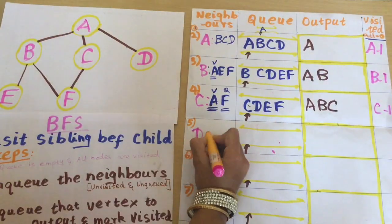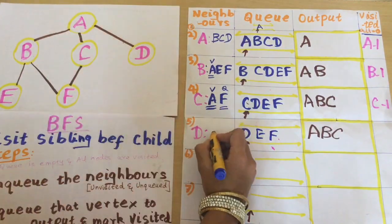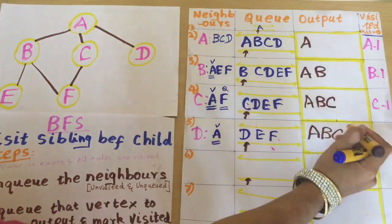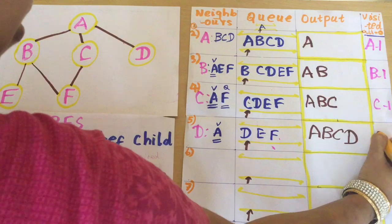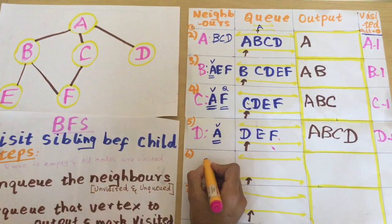The next element pointed by the front is D. The neighbor of D is only A. I am checking its condition - it is already visited, so I cannot enqueue it. I can directly dequeue D to the output and mark it as visited.